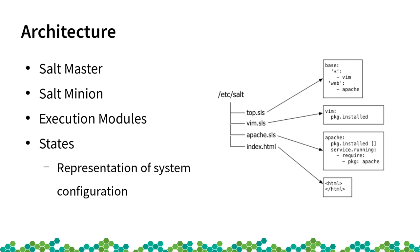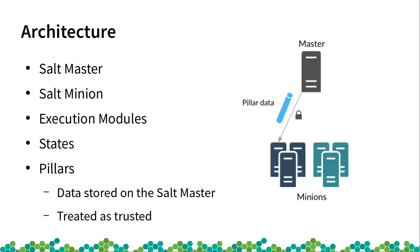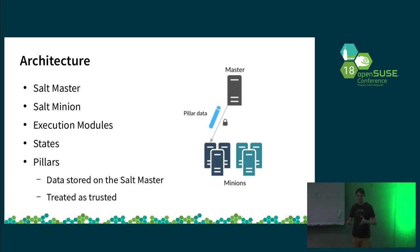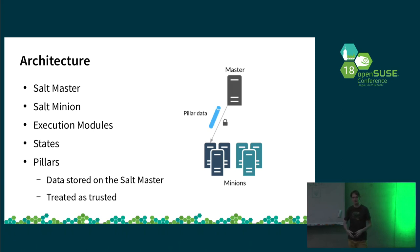If you want to share data between minions and master, there are two ways. Pillars: when you have data on the server and want to distribute it to the minions. They are considered secure — encrypted even between minions, so if you have pillars for a specific minion, other minions can't see them. The minion can't change it; you can only change it manually on the server. Just connecting a minion without any support states means the minion can't change the pillars.